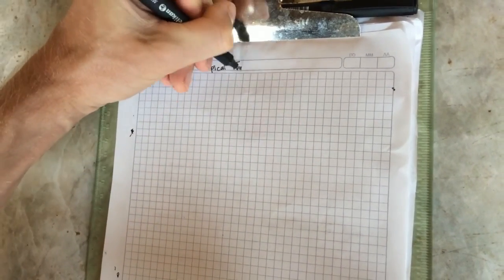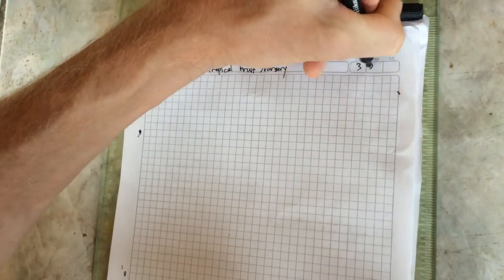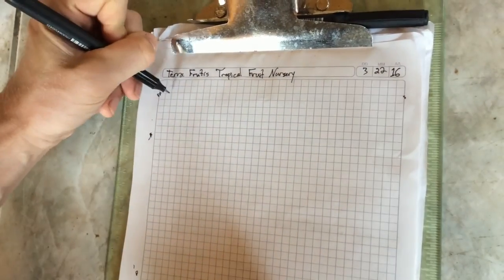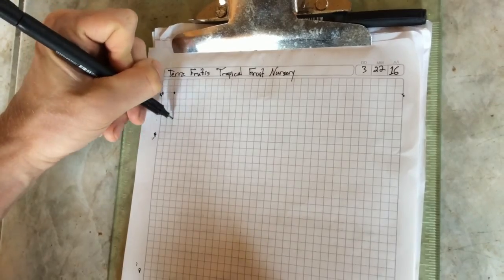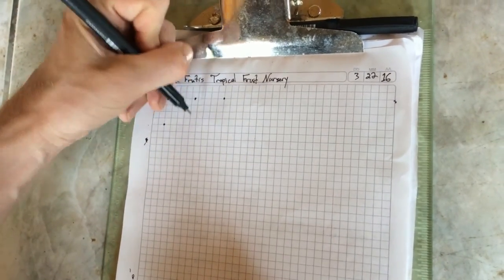So here's the design for the Terrifrutis Tropical Fruit Nursery, which we're beginning construction of right now. It's over 50% crowdfunded. Thank you crowdfunders, thank you crowd.